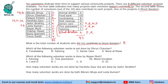Dhruvjohan cannot do tree plantation, tutoring, or blood donation — because for tutoring there is only one person and that has to be Falguni, who is the only person doing all 8 projects. So tree plantation, tutoring, and blood donation are not done by Dhruvjohan. He can do these 5 projects: fundraising, senior care, and others. So Dhruvjohan is doing 5 projects.